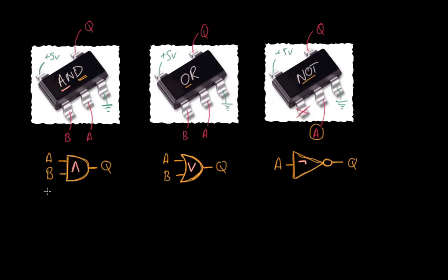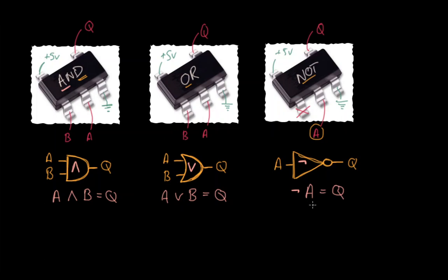To represent these in algebra: A AND B equals Q is written A ∧ B = Q; A OR B equals Q is written A ∨ B = Q; and NOT A equals Q is written ¬A = Q. NOT is a unary operator so you write the operator then the operand. AND and OR are binary operators with two operands — that's conjunction, disjunction, and negation.